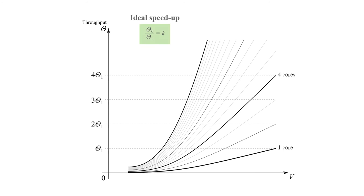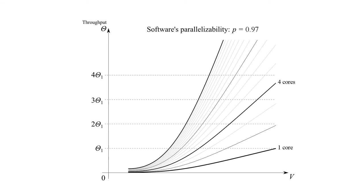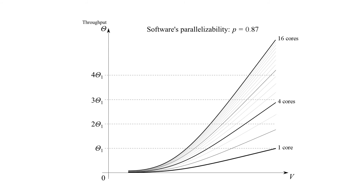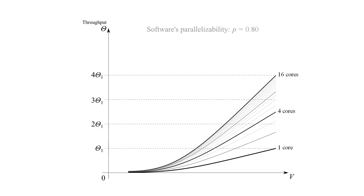The second problem is that the throughputs of individual cores do not simply add up. The performance scaling varies between applications and depends on the software's ability to work efficiently in multiple threads. This effect is described by Amdal's law.